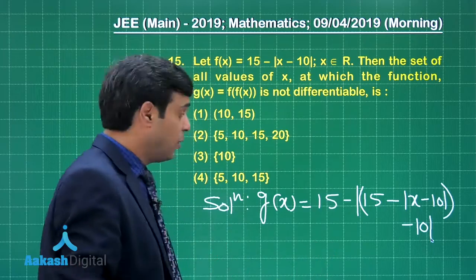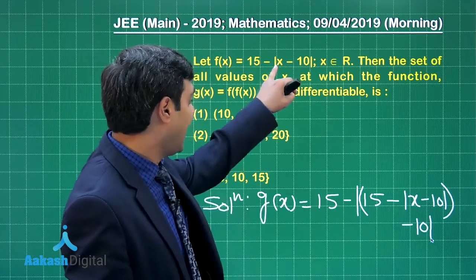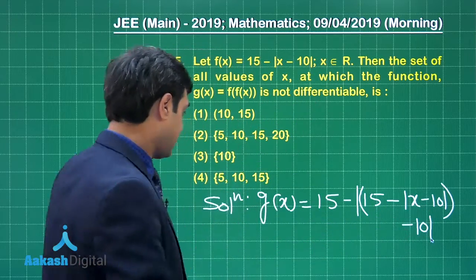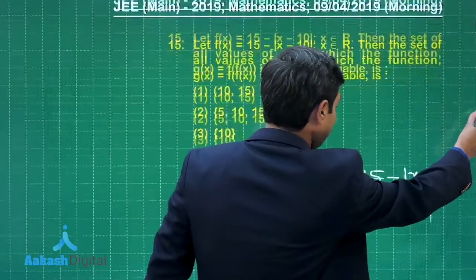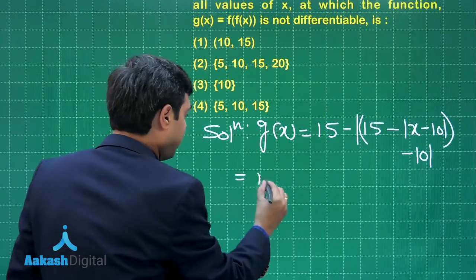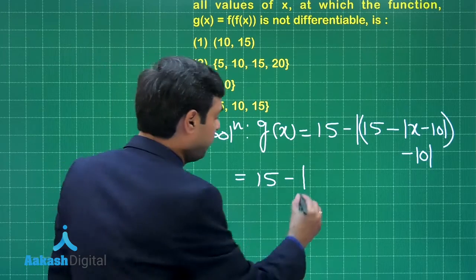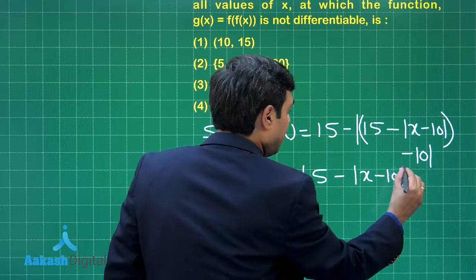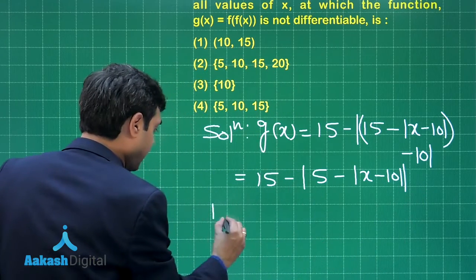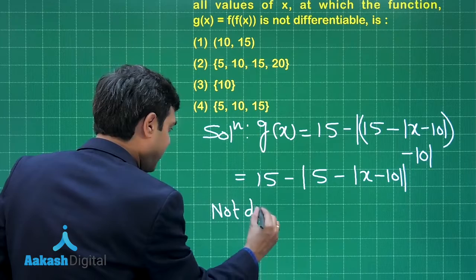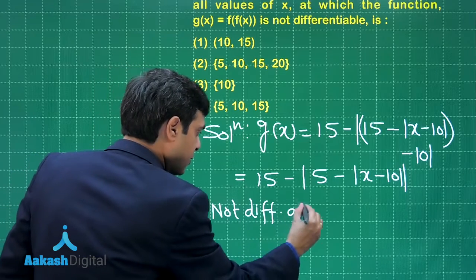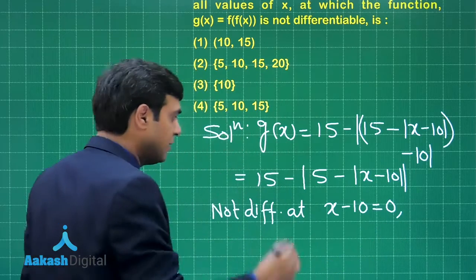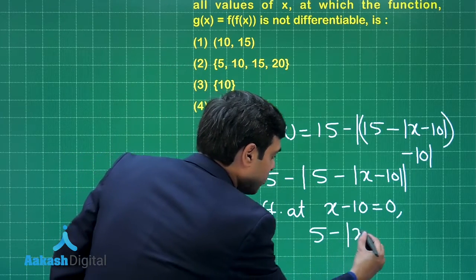What I've done is simply replaced x in f with f(x). Let us rewrite this term, so g(x) = 15 - |5 - |x - 10||. Now it's not differentiable at two cases.